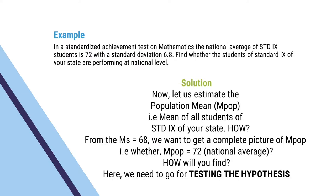Let us estimate the population mean — the mean of all students of standard 9 of your state. The big question is: from the sample mean of 68, we want to get a complete picture of the population mean of your state. Whether the population mean is equal to 72, that is, whether the population mean is at the national average. How will you find it?